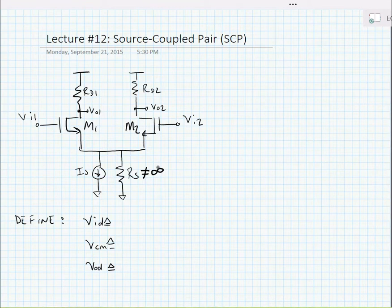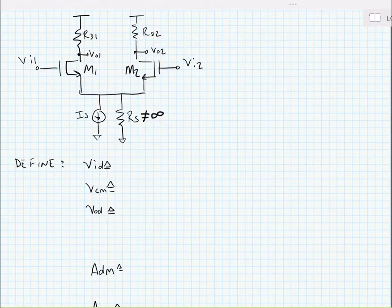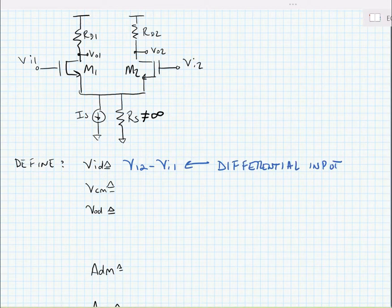Let's define differential operation. We assume that our input is differential, that is to say VID is equal to the difference of VI2 minus VI1. We may have an average value of those input ports or a DC value. This is the common mode value, or it's the average of VI2 and VI1.